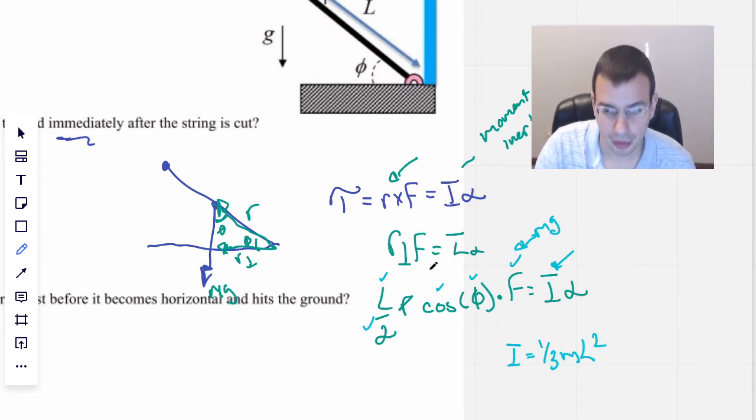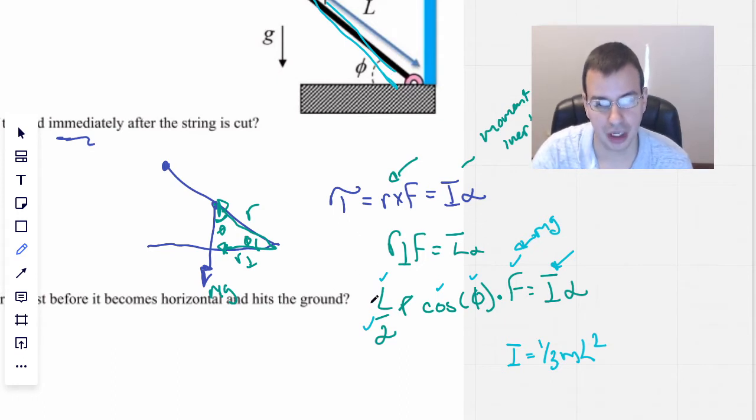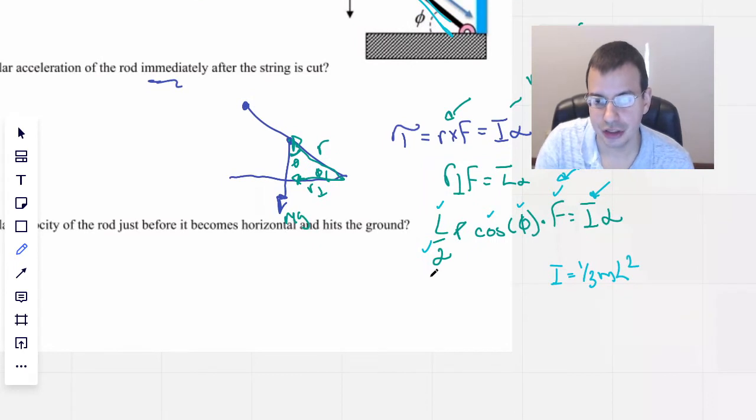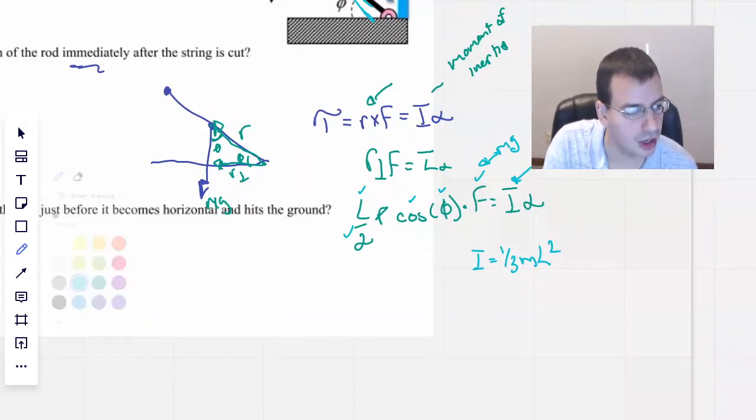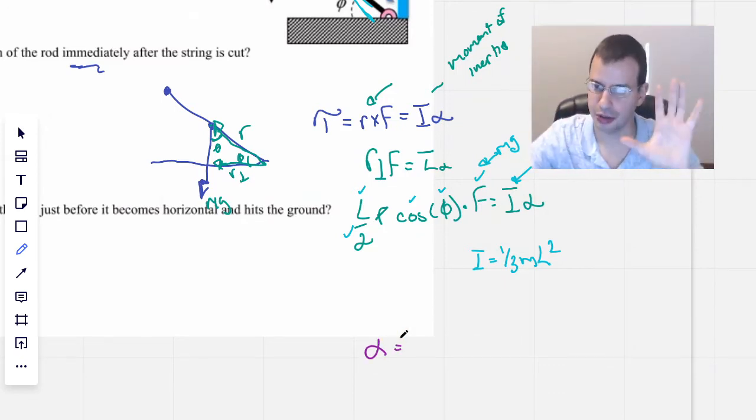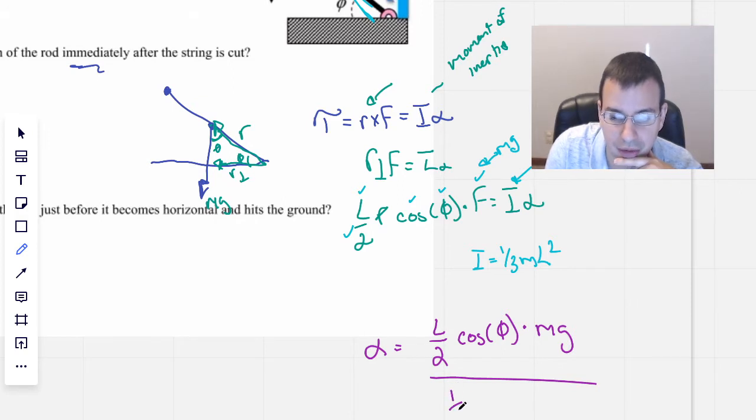Here we had to convert radius to L over 2, but that's already assumed in this portion right here. So we're trying to solve for alpha. This is what I mean by it's all in the setup. It's making sure you got all the terms correct and the pictures drawn correctly. So we have L over 2 cosine of phi times mass times gravity, all over a moment of inertia, which is one third ML squared.